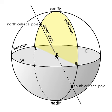Hence, the number of celestial meridians is also infinite. The celestial meridian is undefined when the observer is at the geographical poles, since at these two points the zenith and nadir are on the celestial poles, and any great circle passing through the celestial poles also passes through the zenith and nadir.